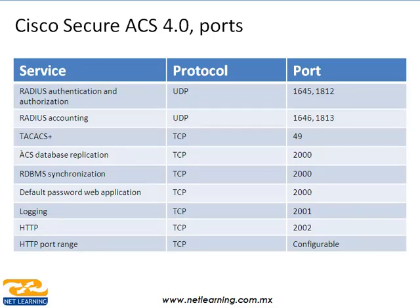Siempre que vemos puertos en material de estudio, es un hecho que los debemos aprender de memoria para el examen. ¿Qué servicios, protocolos y puertos utiliza el ACS? La autenticación de RADIUS utiliza UDP en los puertos 1645 y 1812. El Accounting de RADIUS utiliza UDP en los puertos 1646 y 1813. TACACS+ utiliza el protocolo TCP en el puerto 49. El puerto para replicación de base de datos ACS es TCP 2000, igual que la RDBMS Synchronization. El Default Password Web Application también utiliza el puerto 2000 de TCP. Para hacer el login utiliza TCP en el puerto 2001. El HTTP por default es el 2002 y el Port Range de TCP puede ser configurable.